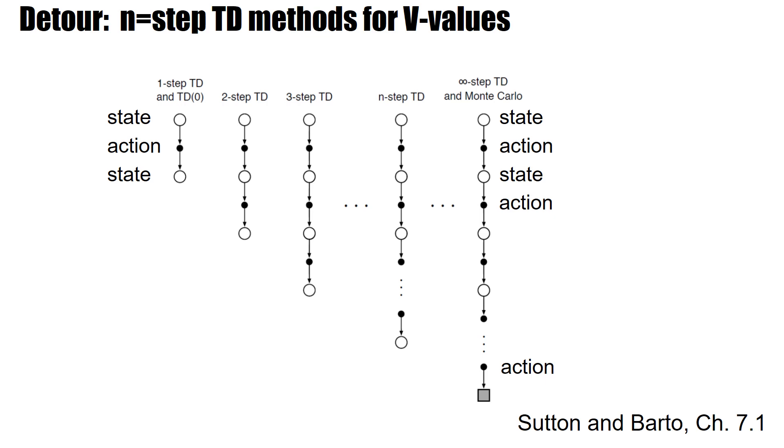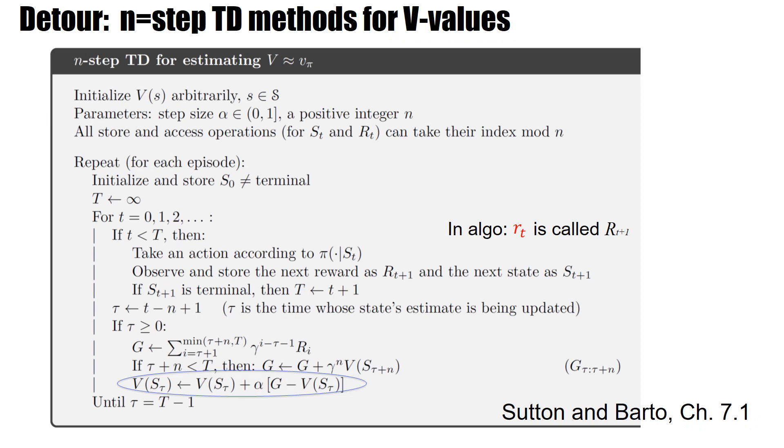Before I finish, just a quick detour. I discussed the n-step TD methods for Q values, but you can do exactly the same for V values, in which case the simple graph is just from state action to the next state. Two-step TD also starts at a state and ends at a state, three steps, and so forth. And here would be the corresponding algorithm for the V values, n-step TD methods for V values.